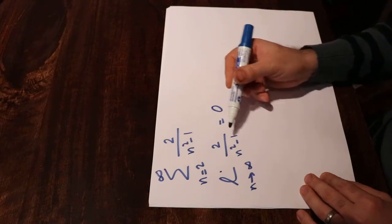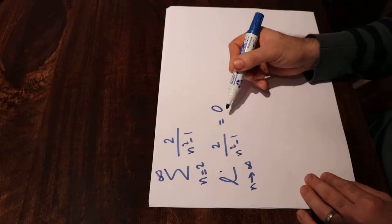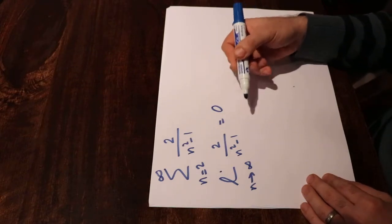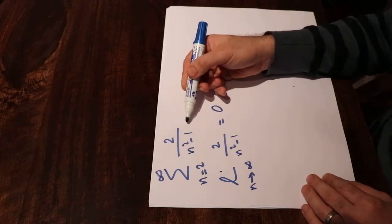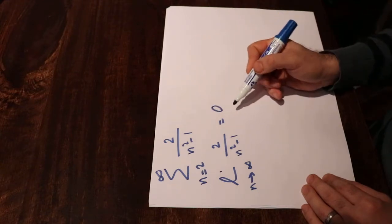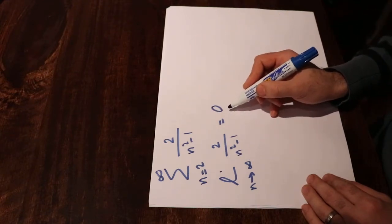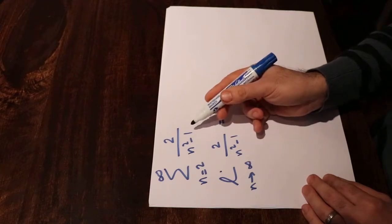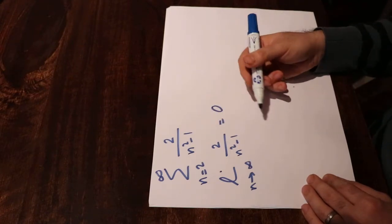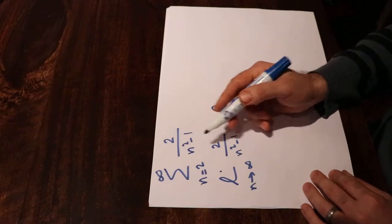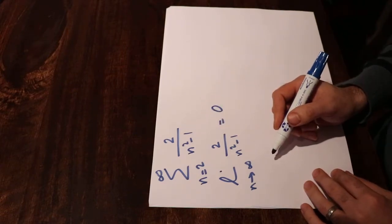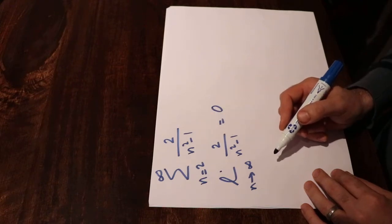Note that if the limit was not equal to 0, or if the limit did not exist, then you could conclude this series is divergent. But since the limit is equal to 0, this test is not useful anymore, so you need to find a different method to determine whether this series is divergent or convergent.